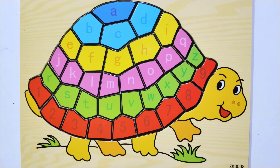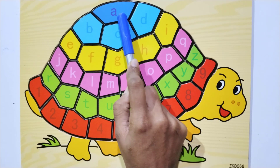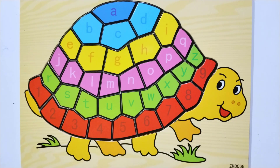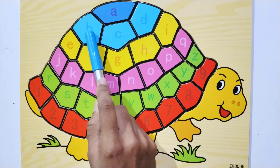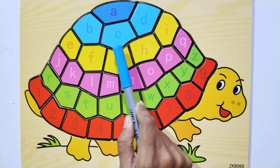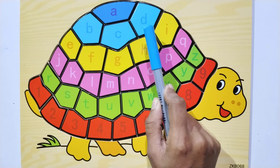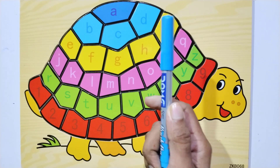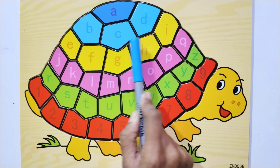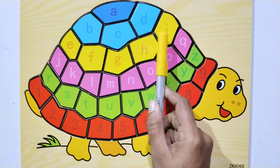Say with me — A. Blue color A. B. Say with me — C. D. Sky blue color B, C, D. Yellow color E.